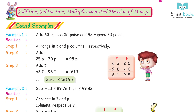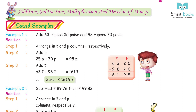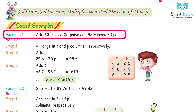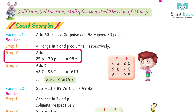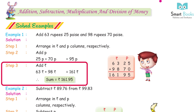Addition, subtraction, multiplication, and division of money. Solved examples. Example 1: add Rs. 63.25 and Rs. 98.70. Step 1: arrange in rupees and paise columns respectively. Step 2: add paise — 25 paise + 70 paise = 95 paise. Step 3: add rupees — 63 + 98 = 161 rupees. Sum = Rs. 161.95.